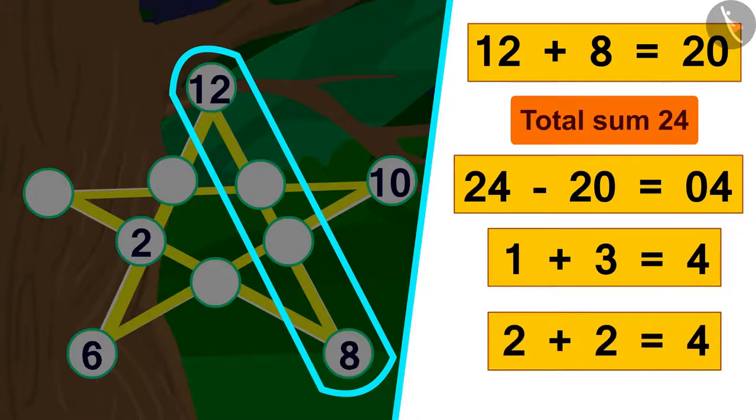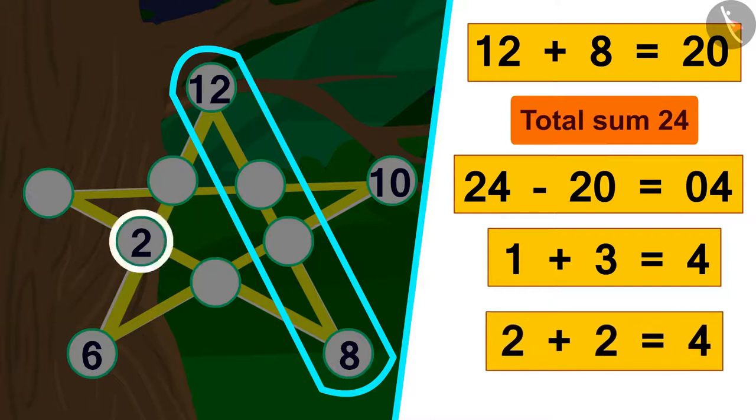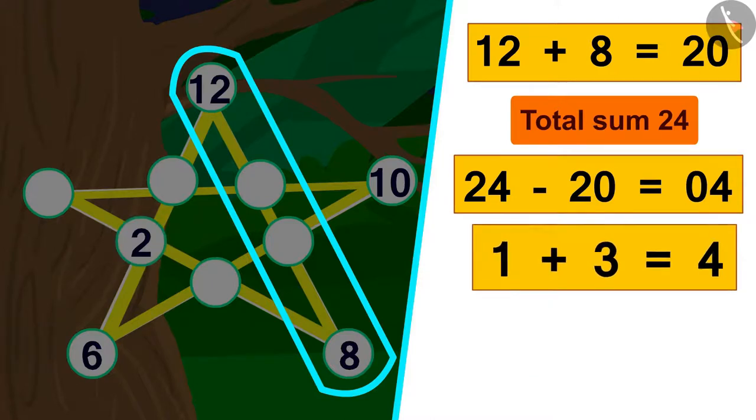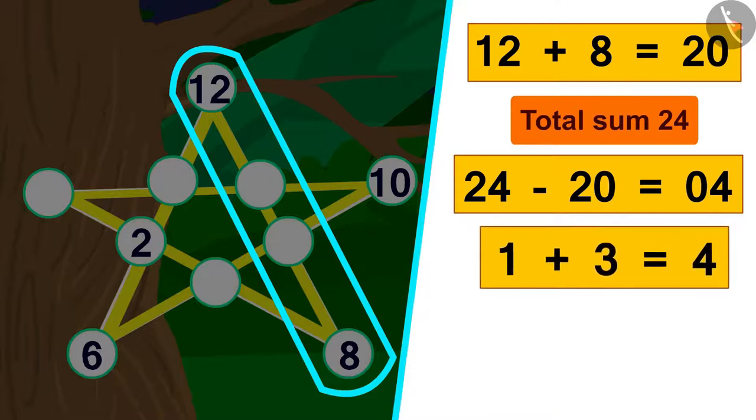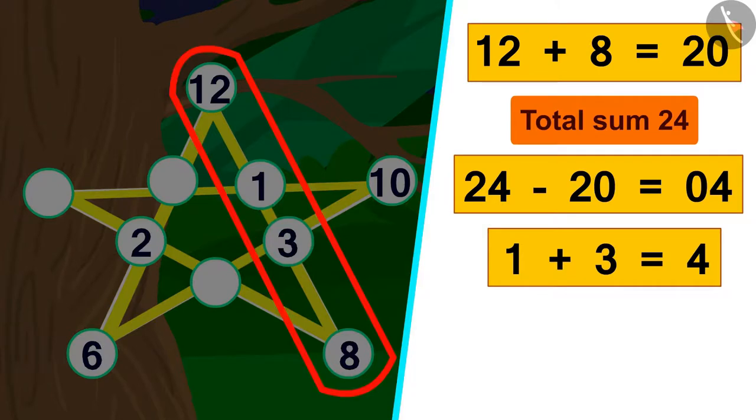But when adding 2 to 2, the number is being repeated. That is why we will write numbers 1 and 3 in the empty spaces of this edge. On saying this, Babalu wrote the numbers 1 and 3 in the empty spaces.